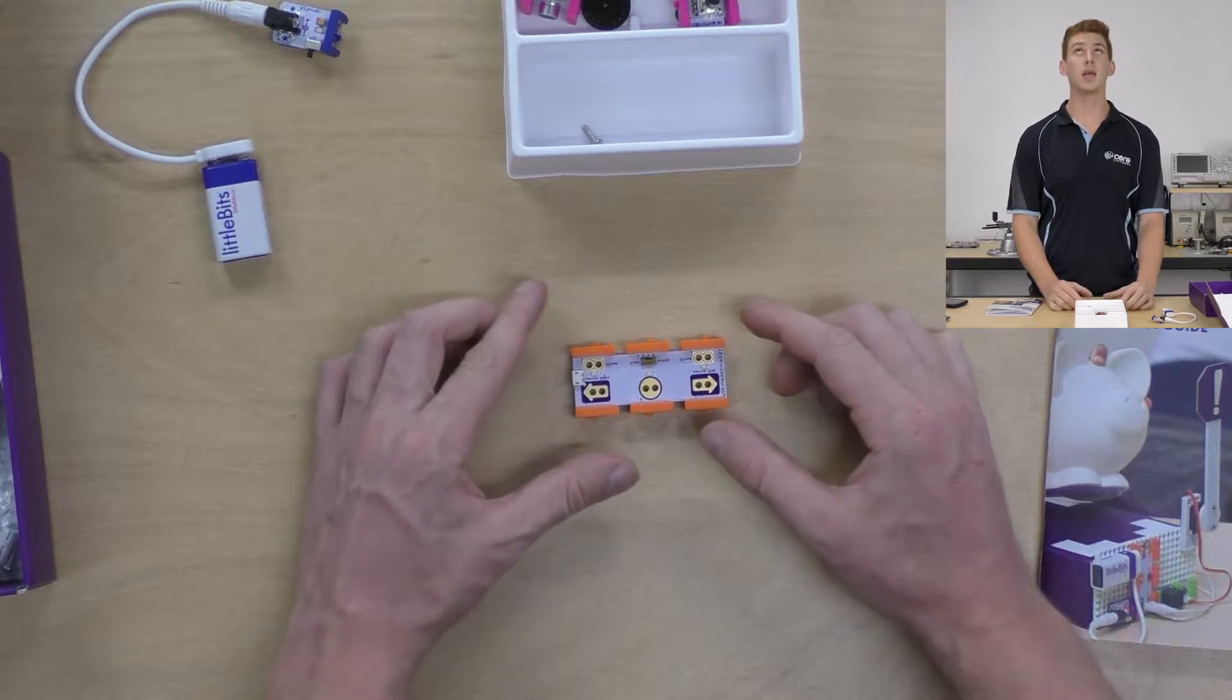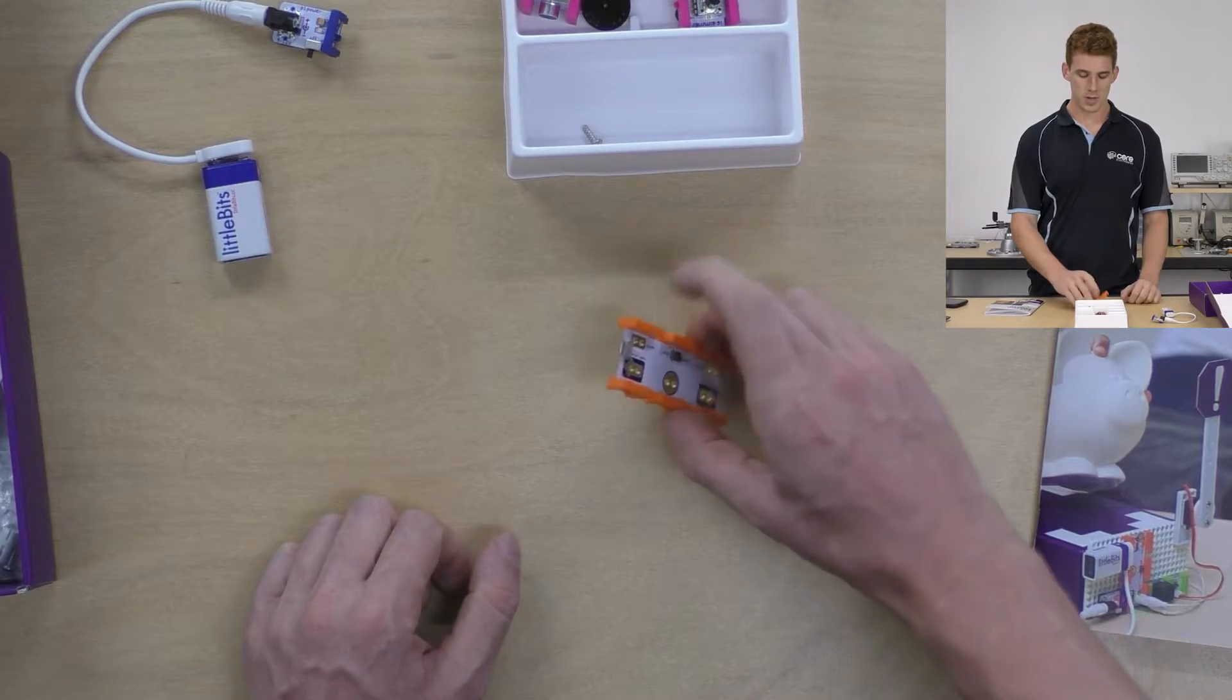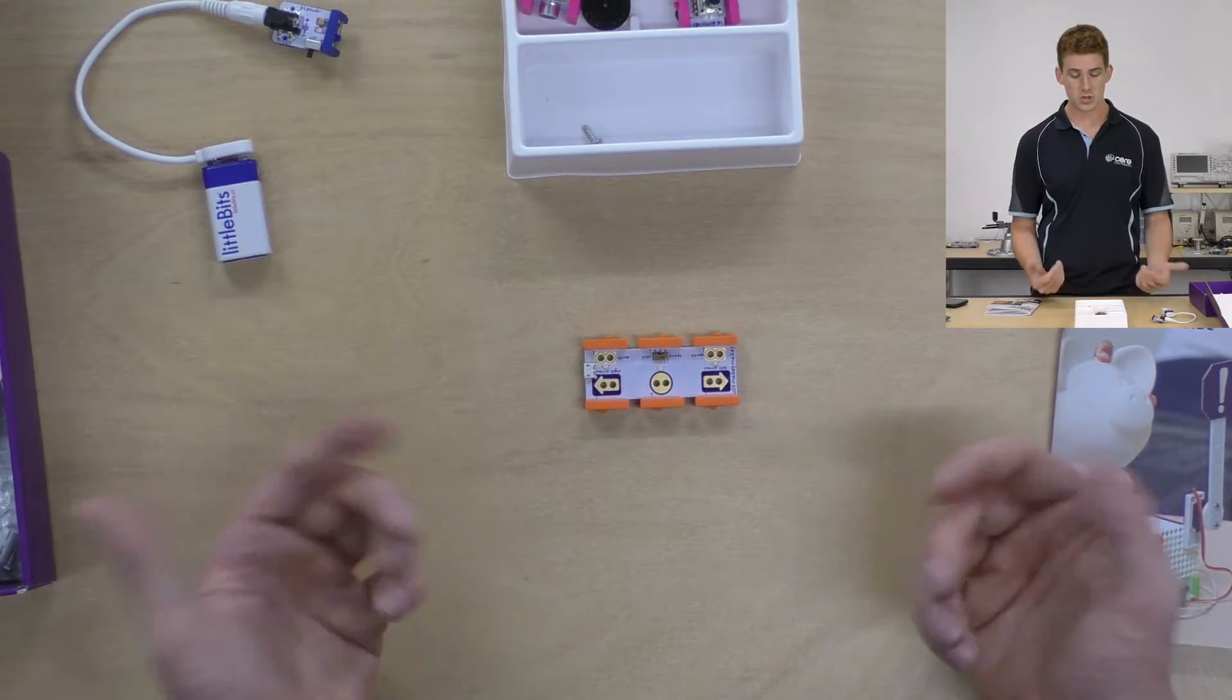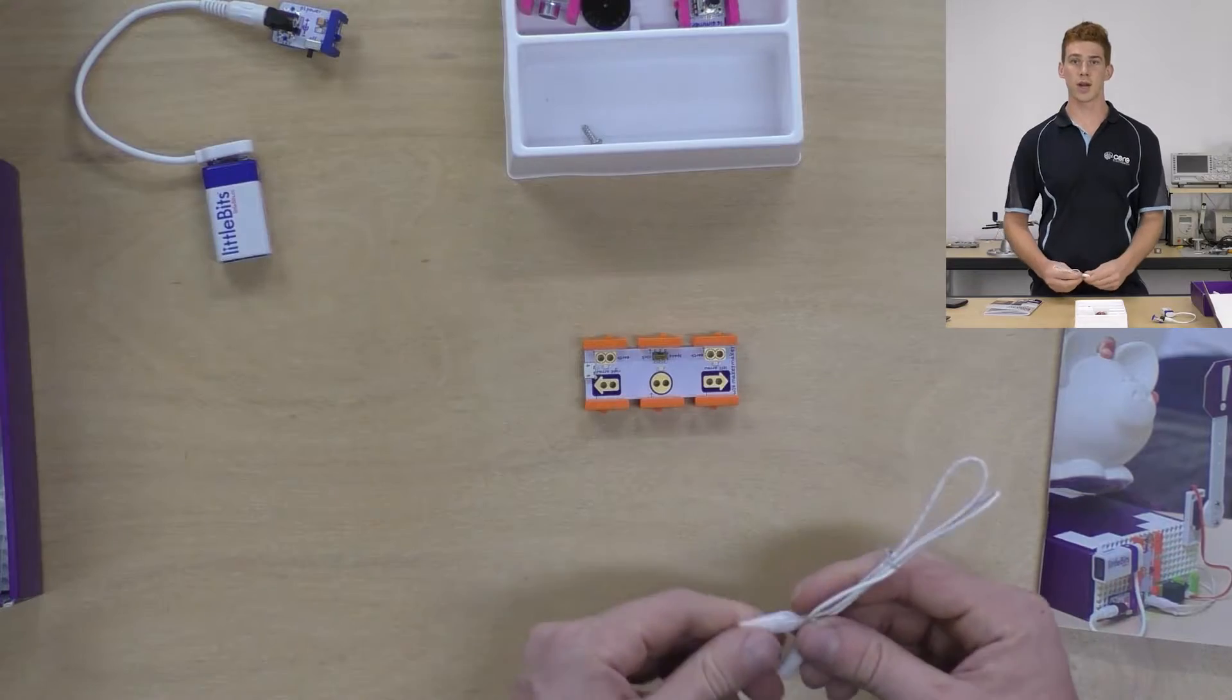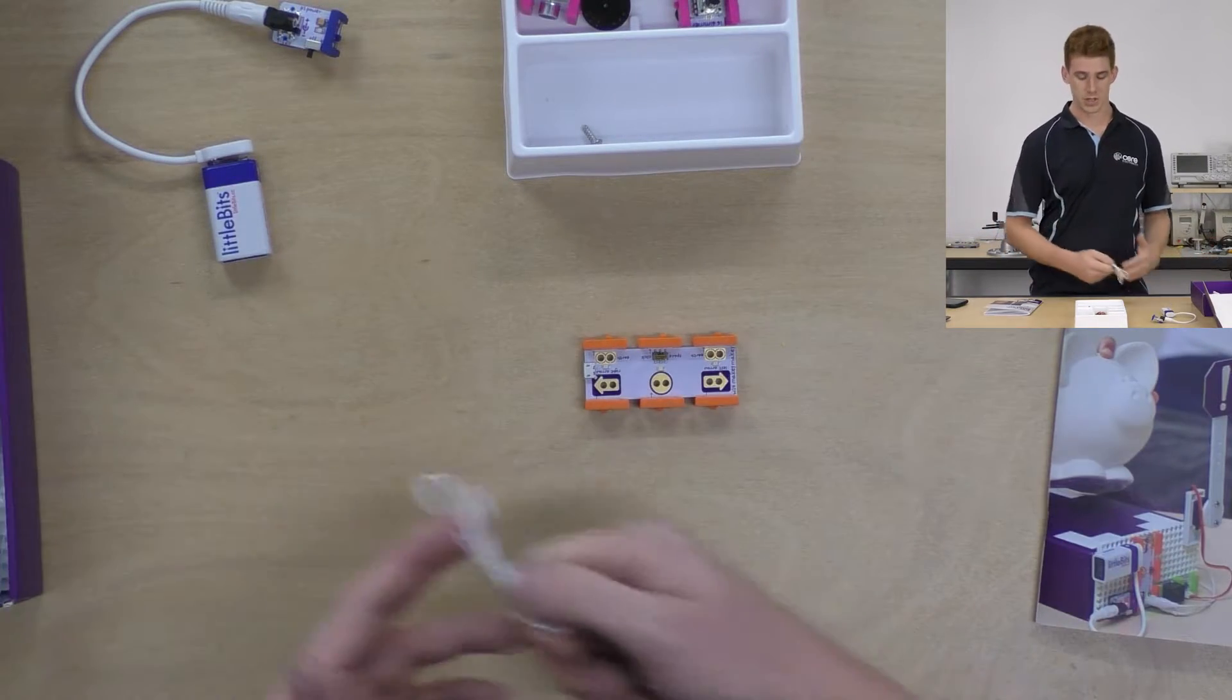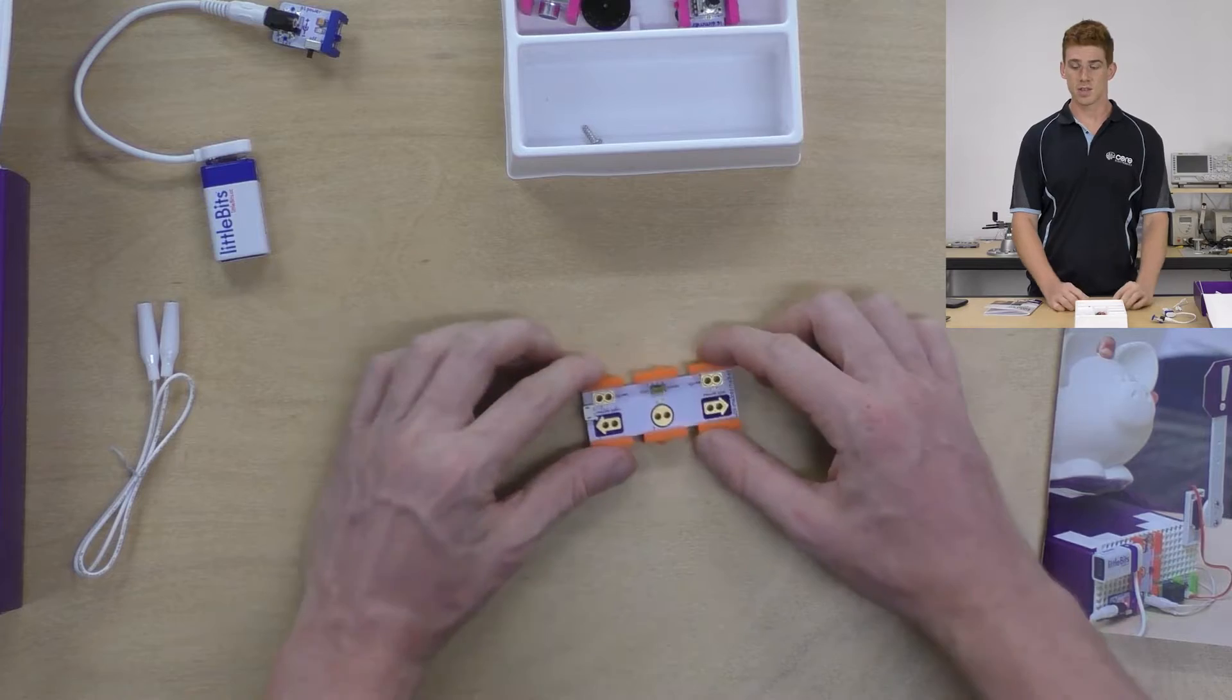So the Makey Makey bit that you can see here actually has three different inputs that you can control and a micro USB cable so you can connect that up to your computer. And essentially these are keystrokes on a keypad. You can use some of the included alligator clips to connect up to anything that's conductive in the world around you and control either your computer or your Little Bits invention using some pretty much made up switches. So that's the centerpiece bit of this kit.